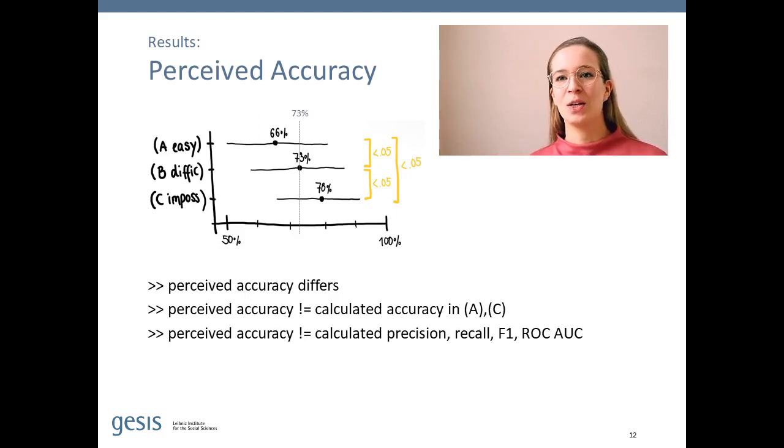If we compare those numbers with the calculated accuracy, which was 73% in all three conditions, we find that in A, our calculated accuracy is significantly higher than the perceived accuracy, and in C the calculated score is significantly lower than what the participants perceived.